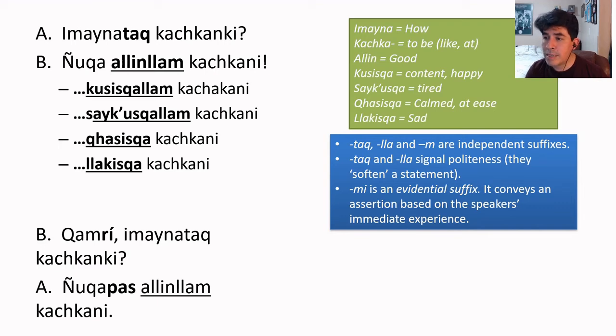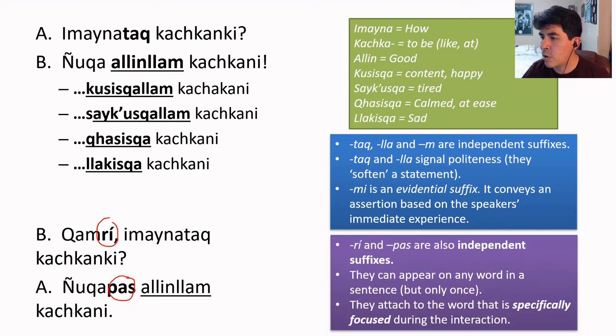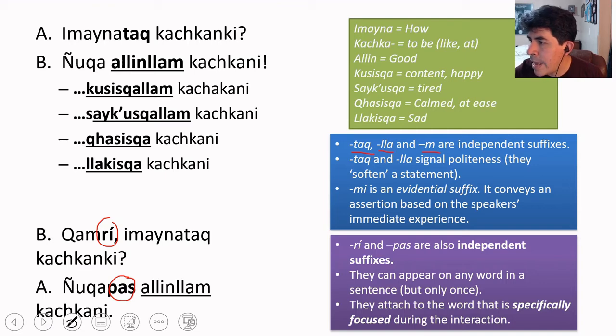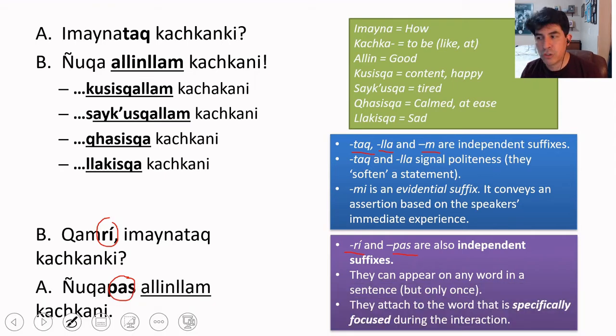What we're seeing here is another set of independent suffixes, ri and pas. Let's take a look at those. Those independent suffixes appear like any other independent suffix, ta, lia, and em are the same type of suffix as ri and pas, and all of them have a different function.